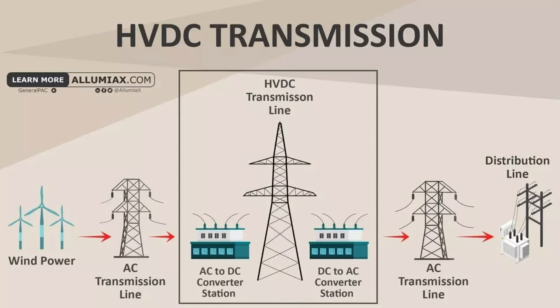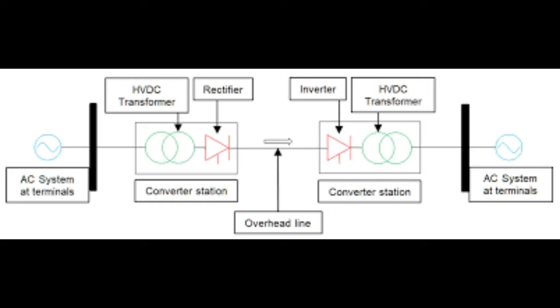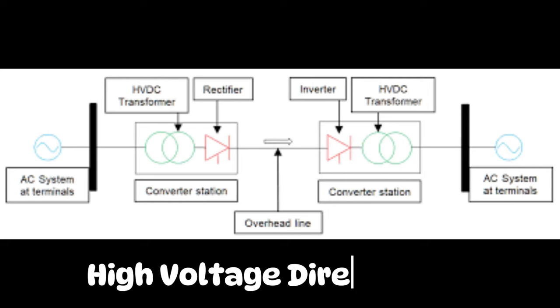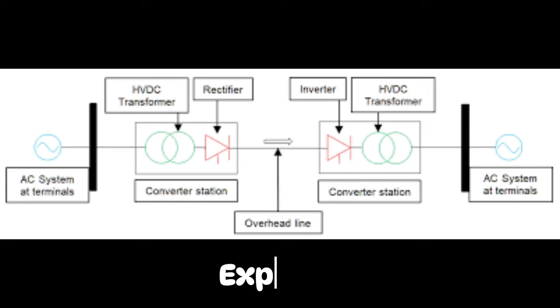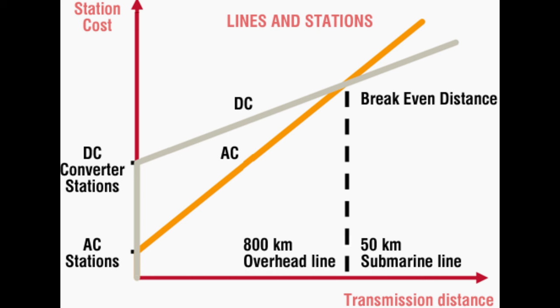Some systems just straight up use HVDC — high voltage direct current — for interconnection. HVDC is expensive, but if the distance is long enough, there is enough efficiency to justify it.